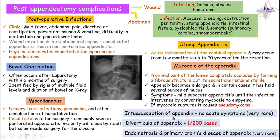Next we have intussusception of the appendix, which is a very rare scenario, and there are no actual acute symptoms present with these patients. There can also be diverticula of the appendix, occurring in about one case in 200 cases after appendectomy. There can also be endometriosis and primary Crohn's disease of the appendix, which are also very rare scenarios. It should be noted that stump appendicitis and mucocele of the appendix are also very rare.